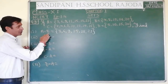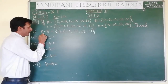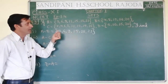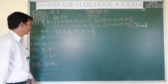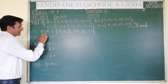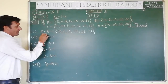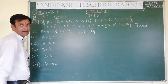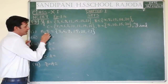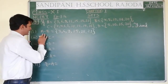Again I am telling: in A minus B, we have to write all those elements of A which are not present in B. All the elements of A which are not present in B is known as A minus B. This is how we calculate A minus B.